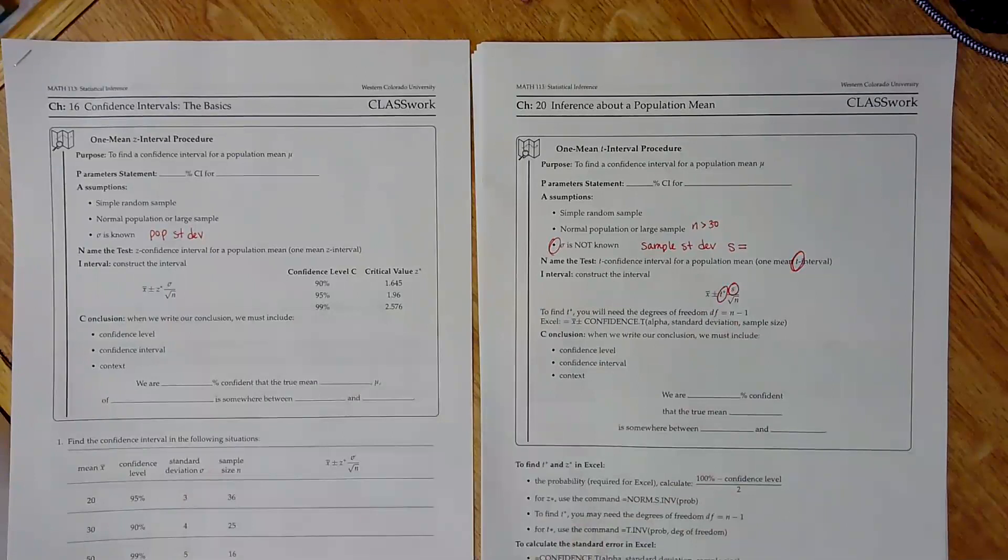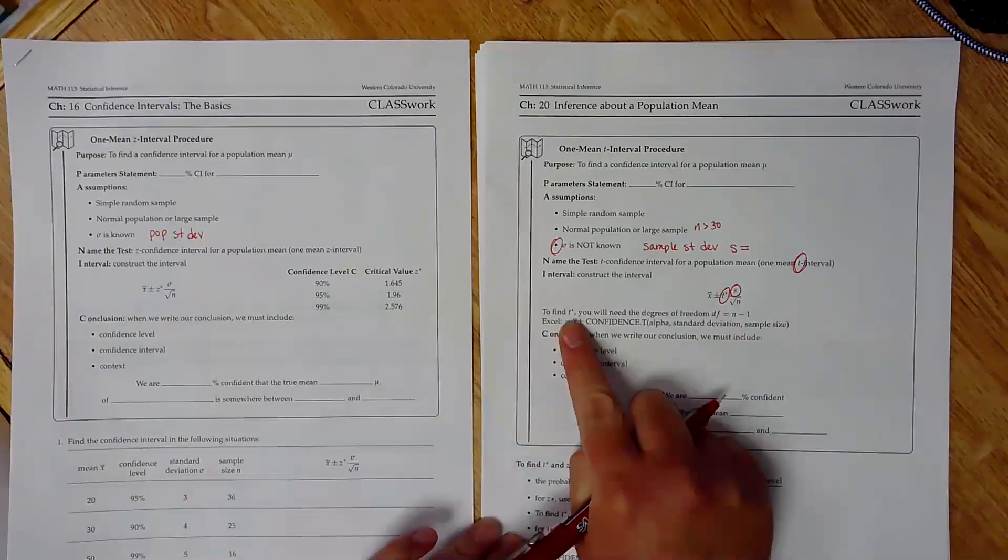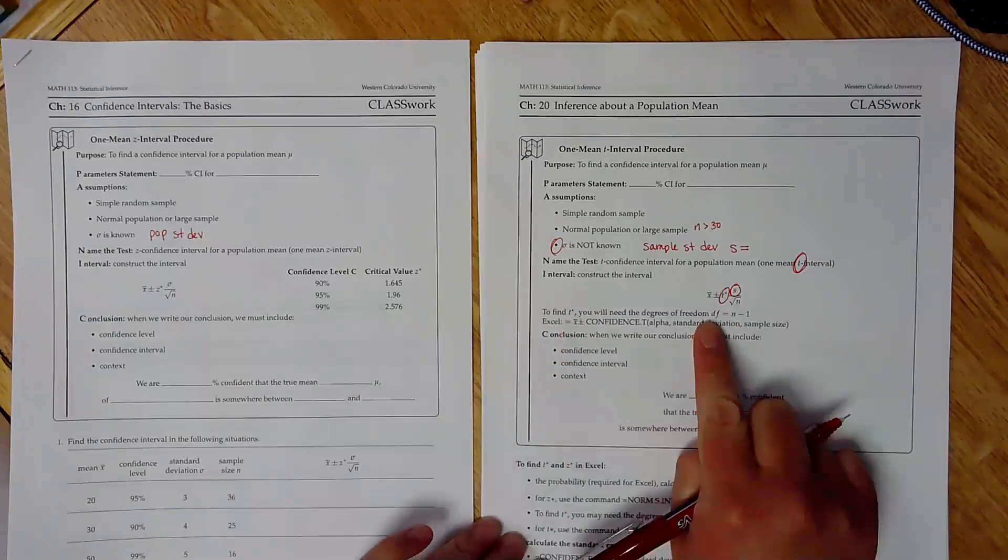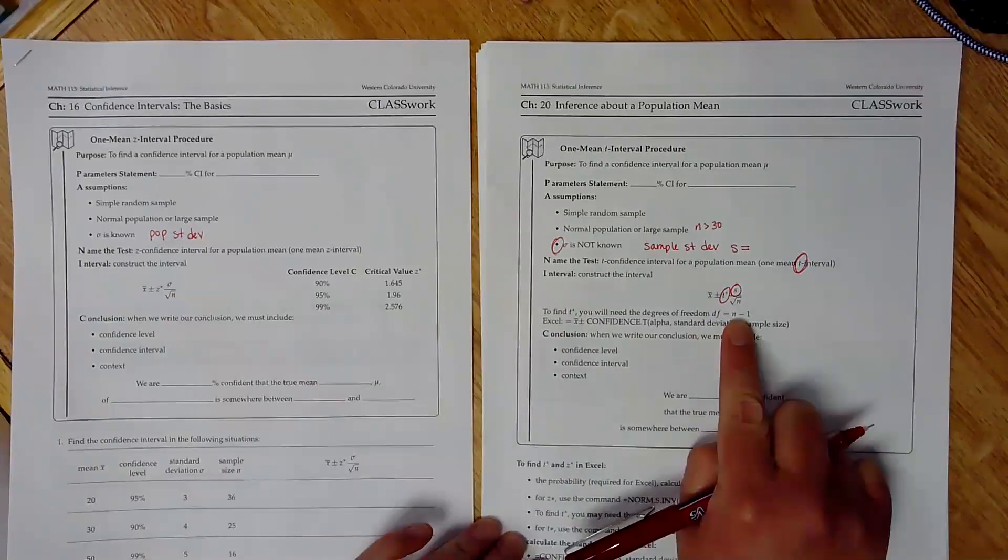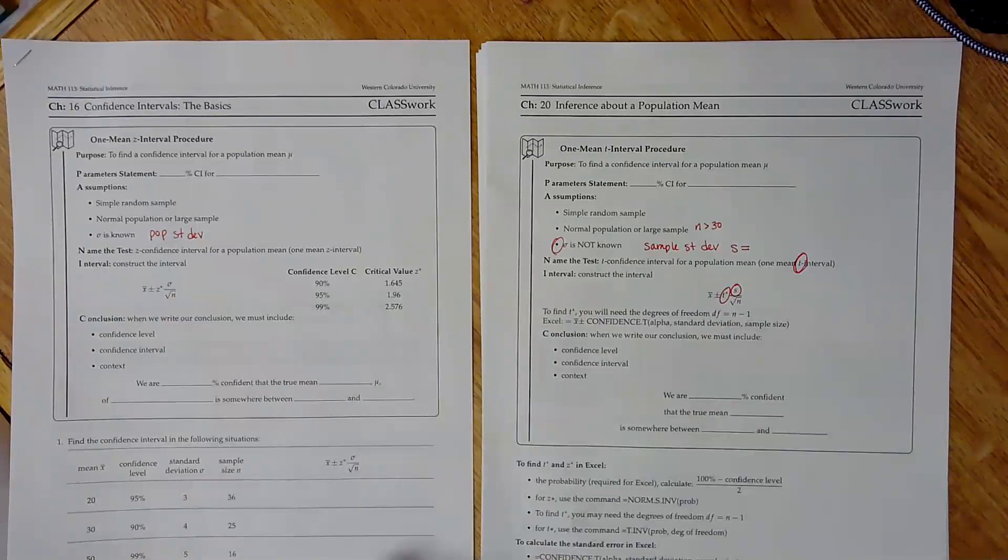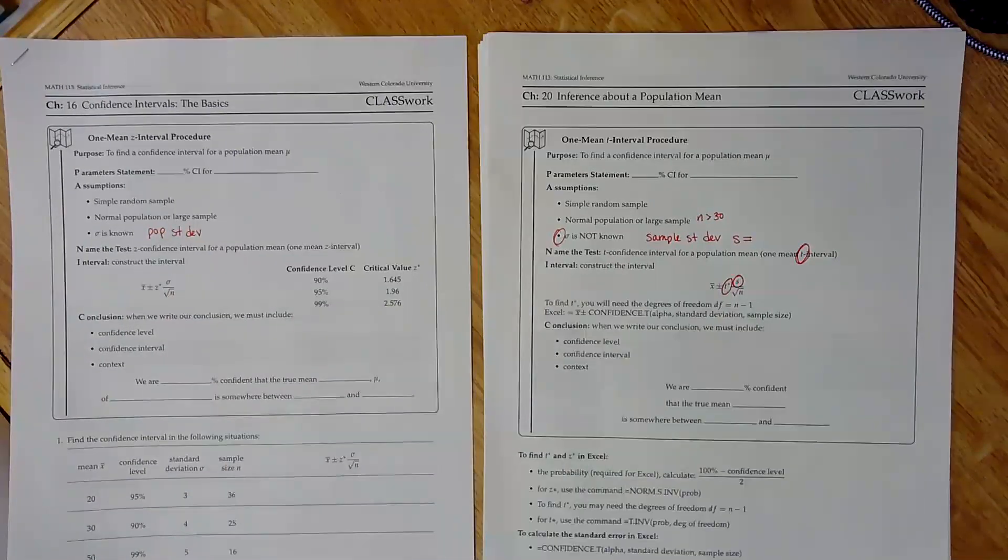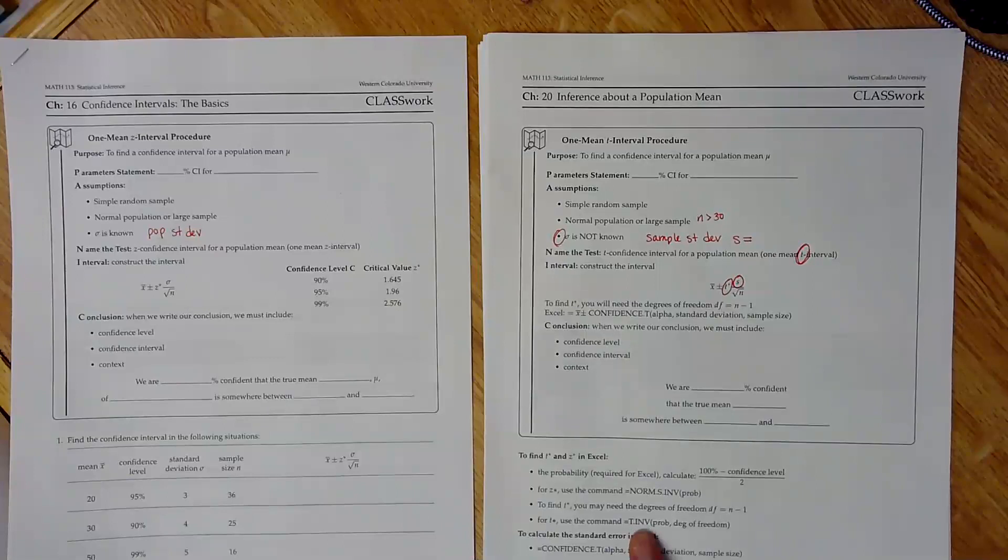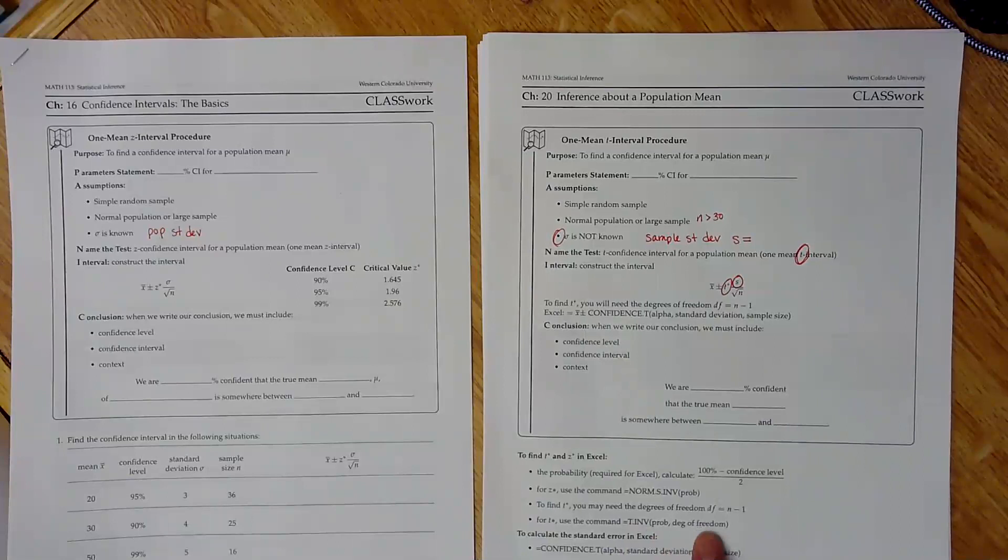Okay, so to find your t star, you're going to need to know your degrees of freedom. So your degrees of freedom are defined to be n minus 1. So you take your sample size and subtract 1. Okay, and if you want to look up exactly what t star is, you can use this t dot inverse command. Okay, you put in the probability and the degrees of freedom, which we just talked about how to find that. But that would give you just the t star part.